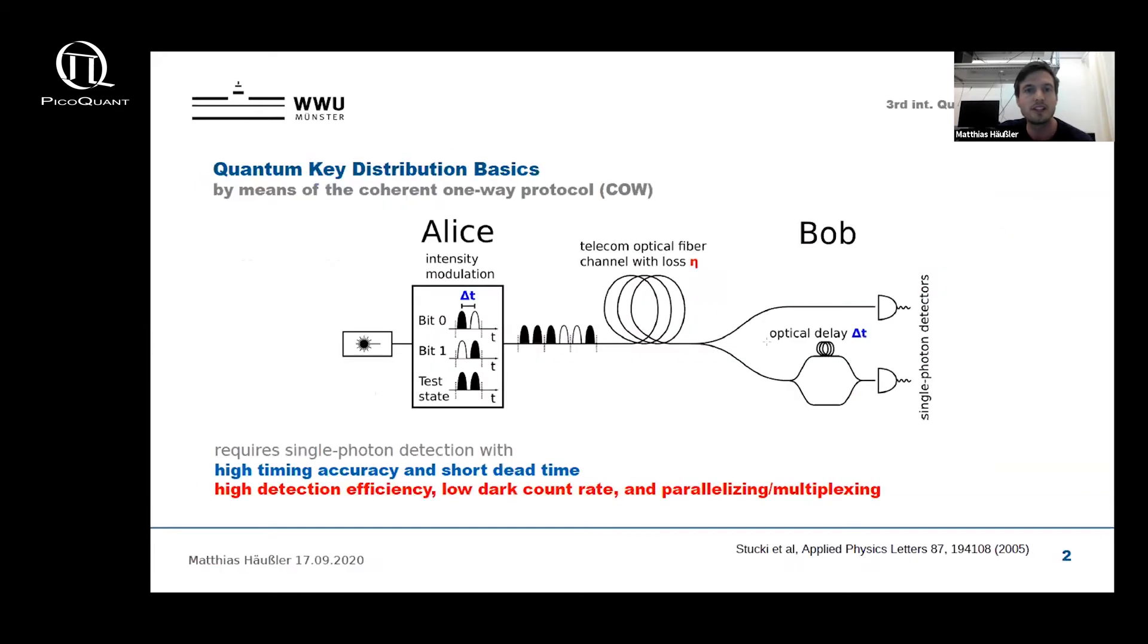Let me start by quickly giving you a short introduction to QKD based on an implementation of a rather simple protocol, the coherent one-way protocol, in order to show you why we need single photon detectors and what requirements these detectors have to fulfill.